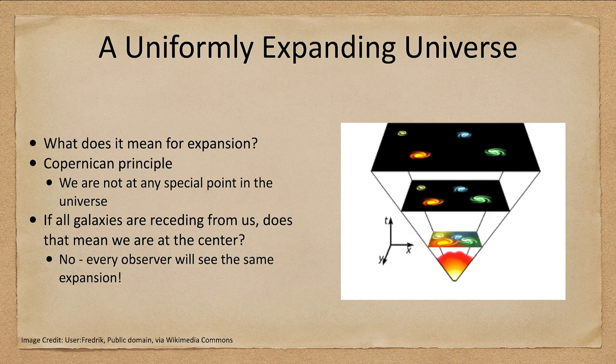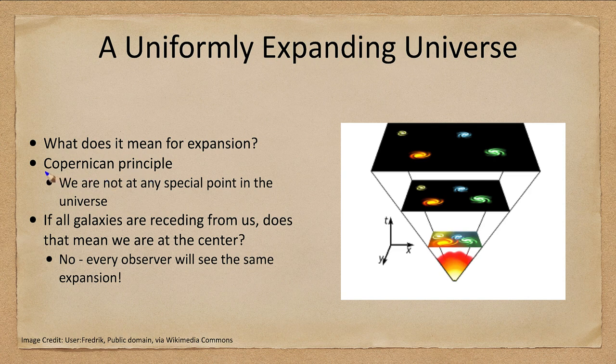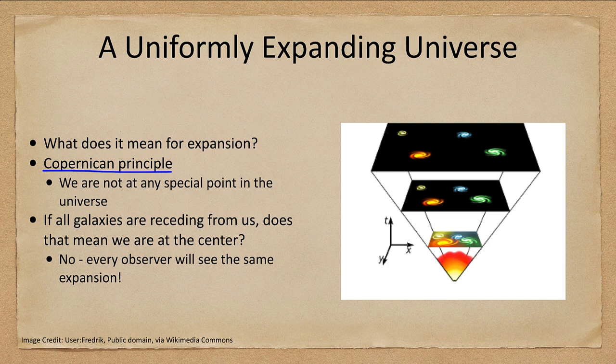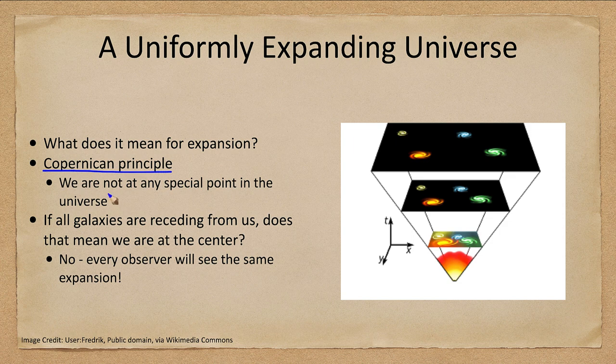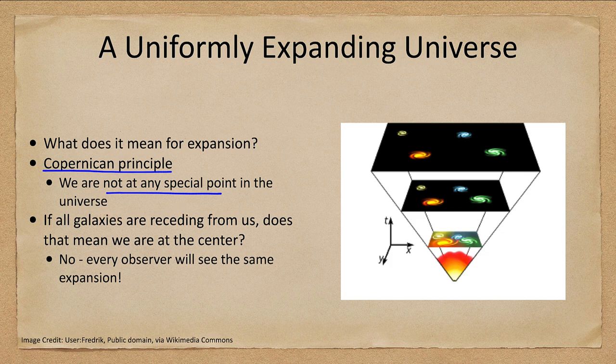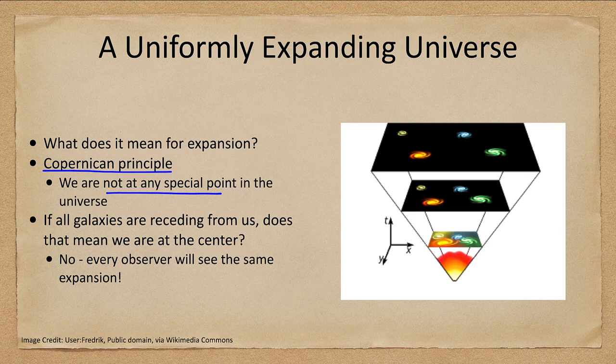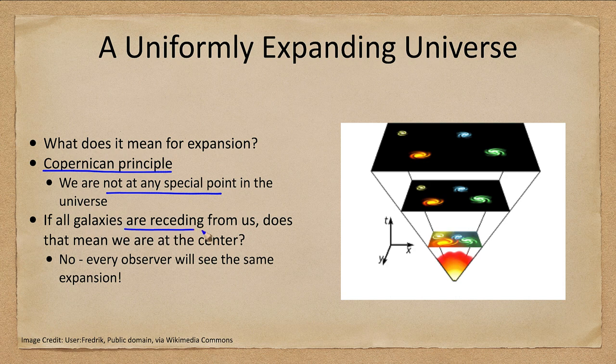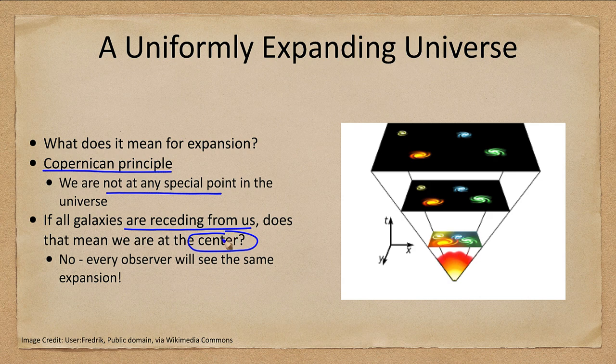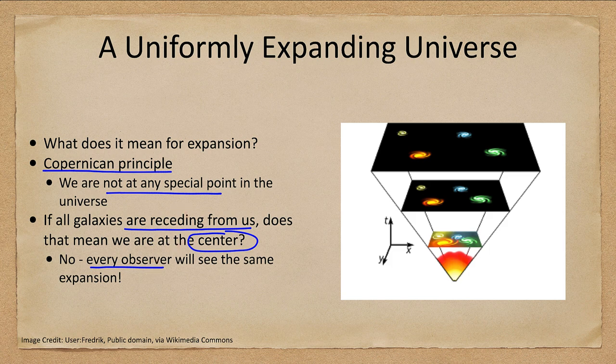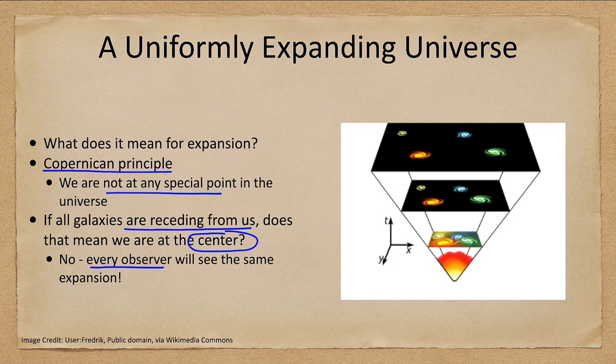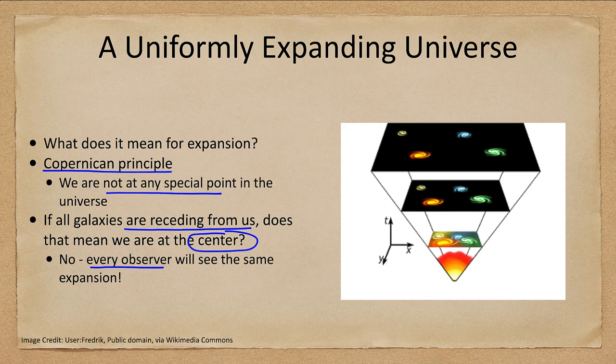So a uniformly expanding universe, what does this mean for the expansion? Well, it really means we go back to what was called the Copernican principle. If you recall, Copernicus was the first modern astronomer to suggest that the sun was the center of the universe rather than earth, moving earth away from its special point in the center of the solar system. So we find that we are not at any special point in the universe. And that means that there are actually no special points within the universe as things expand. It doesn't mean that we are at the center because we see all galaxies receding from us. So you might think, well, we're at the center of the universe. But that's not true. Every observer will see the exact same expansion, no matter where they are in the universe.